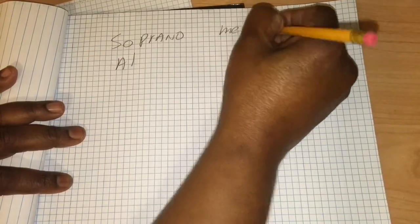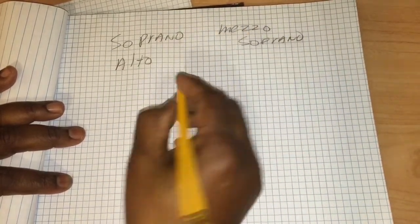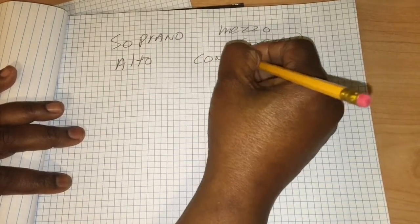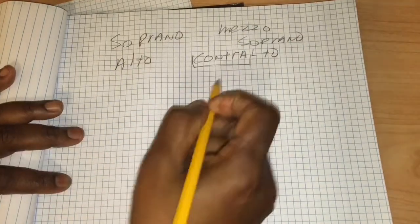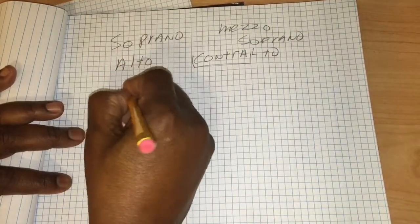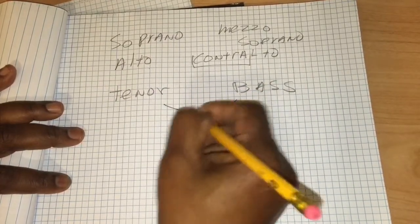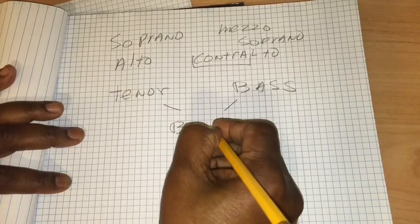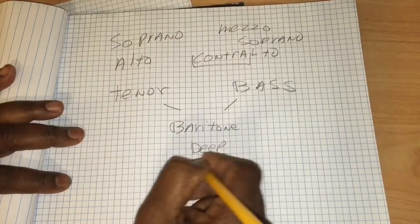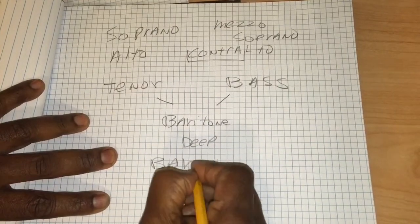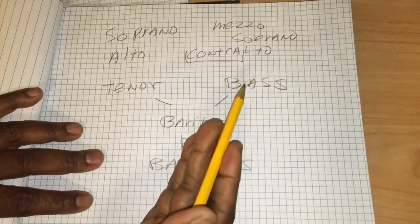I also forgot to mention contralto. Contra means 'against,' so contralto means against the alto. Then we have tenor and bass. For you sticklers out there, there's another one called baritone, which basically means 'deep' or 'heavy' — the Greek word is baritone.